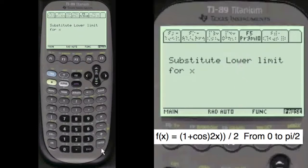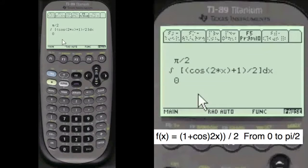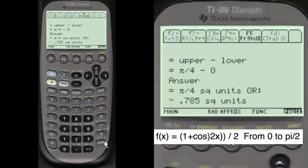Substitute the lower limit for x. Notice we substitute for x 0 and 0. Here's 0 and the answer is 0. So the definite integral is this. And we take the upper limit minus the lower limit, pi over 4 minus 0. The answer is pi over 4 square units or .785 square units. Remember an integral is the area under a curve.